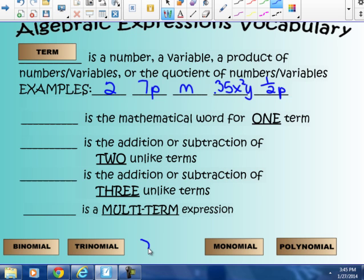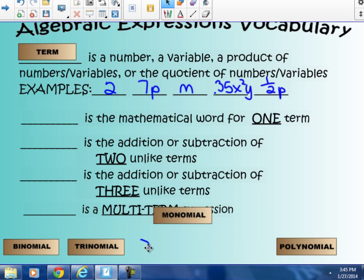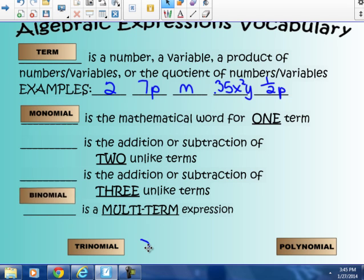So, what do you think would go in this next blank? Is the mathematical word for one term. Well, if you know something about what the prefix mono means, you probably guessed correctly that a monomial is the mathematical word for one. Mono meaning one. Is the addition or subtraction of two unlike terms. Bi meaning two is the key thought there. And I'm sure you see the prefix here on binomial, like a bicycle has two wheels. A binomial has two unlike terms in it.